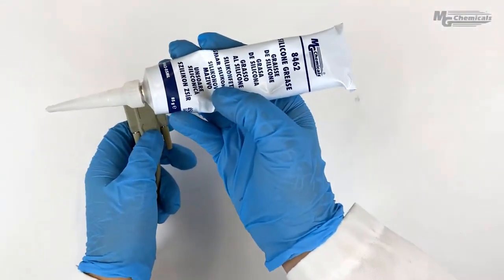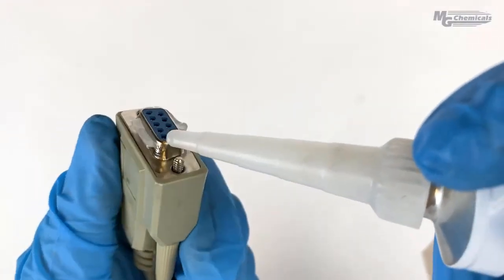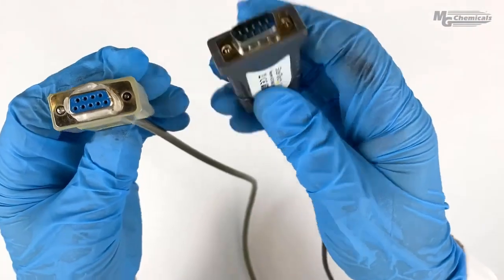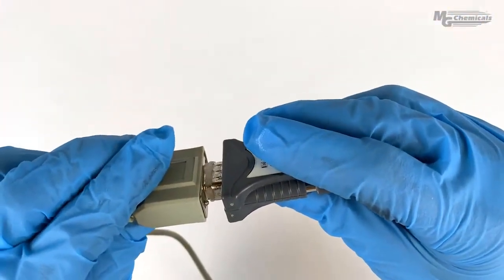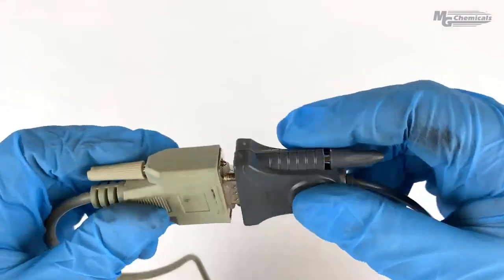Our last example shows how the dielectric grease seals around plugs. We're showing a nine-pin connector, but you can use it around any plug. Many of our customers use dielectric grease to seal around plugs on marine docks to keep water out and prevent the pins from rusting.